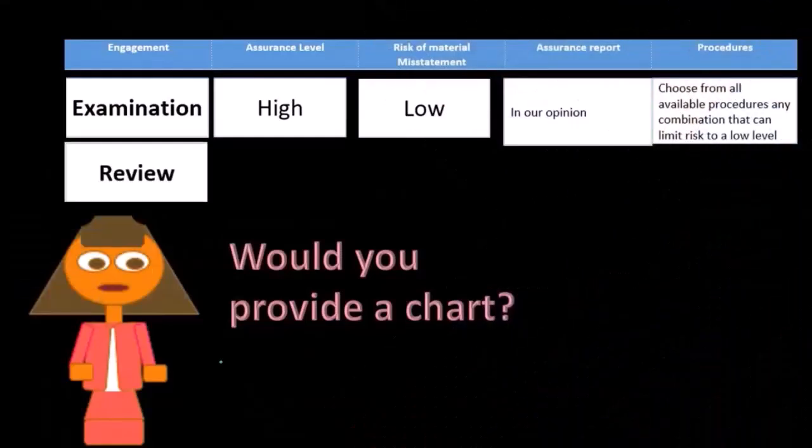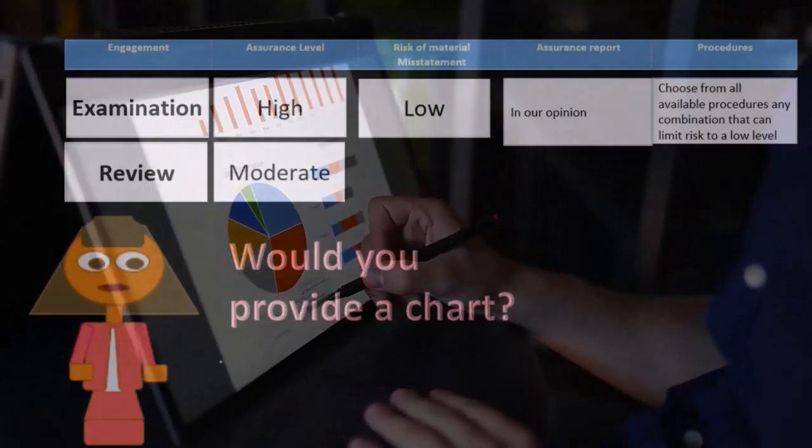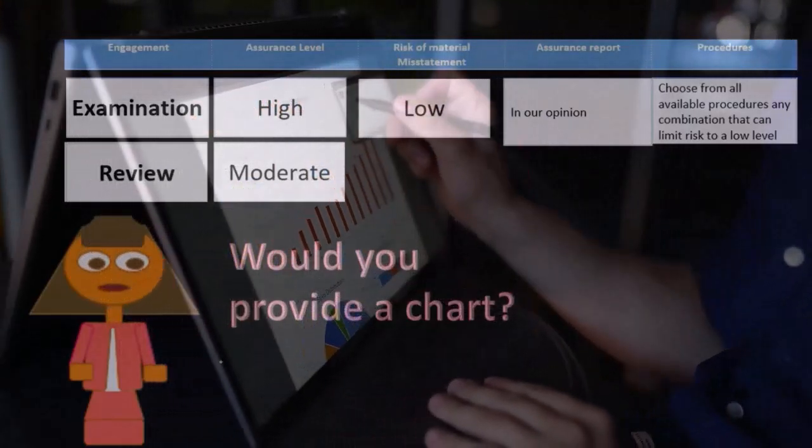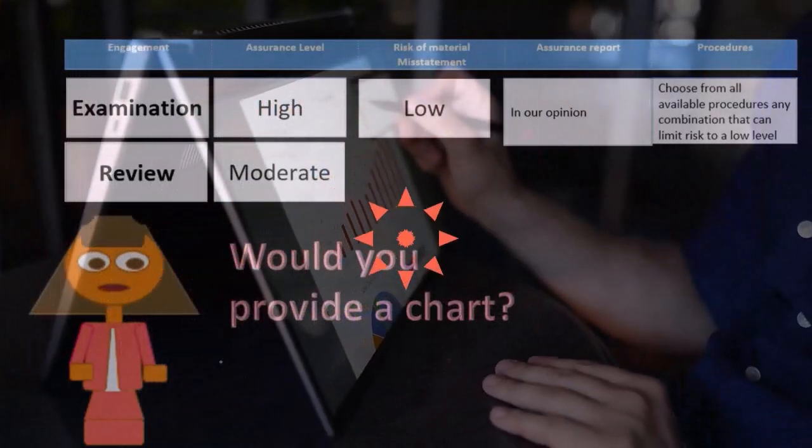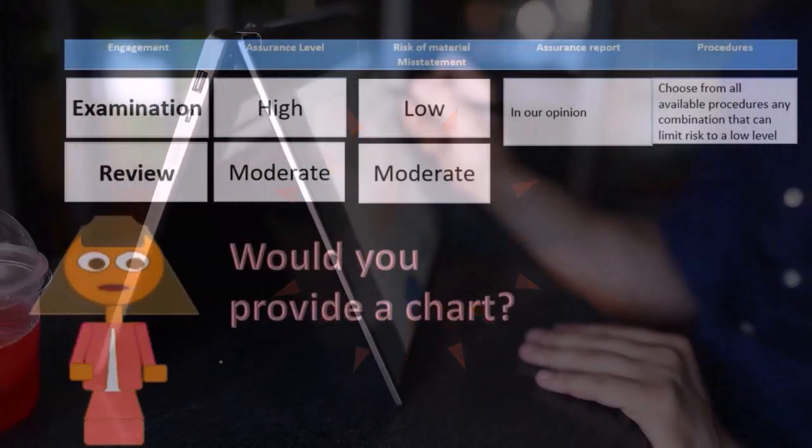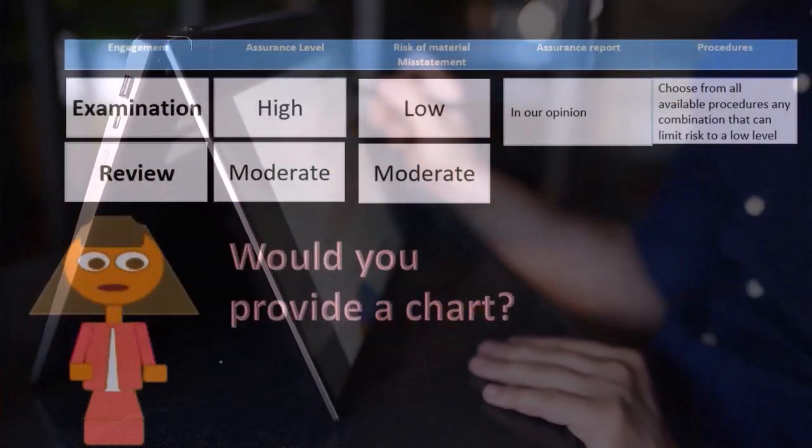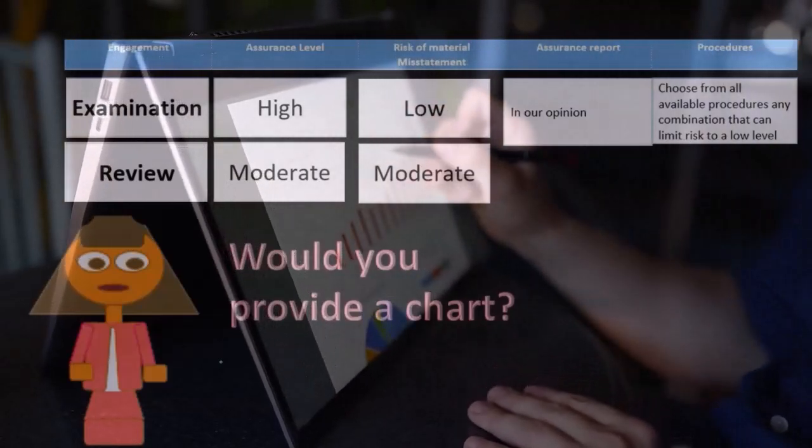Then we have the review. Remember that a review is a lot less, so the assurance level is only moderate. It's not as high a level of assurance if we're doing a review as opposed to an audit. Therefore, the risk of material misstatement is moderate.